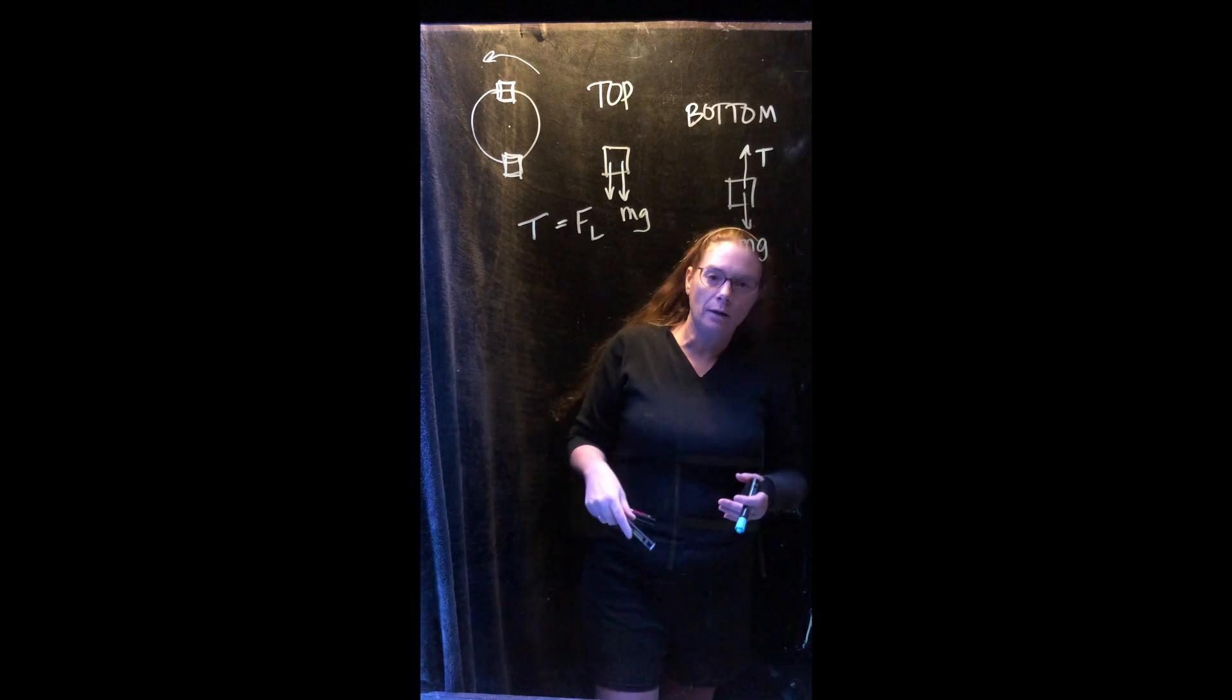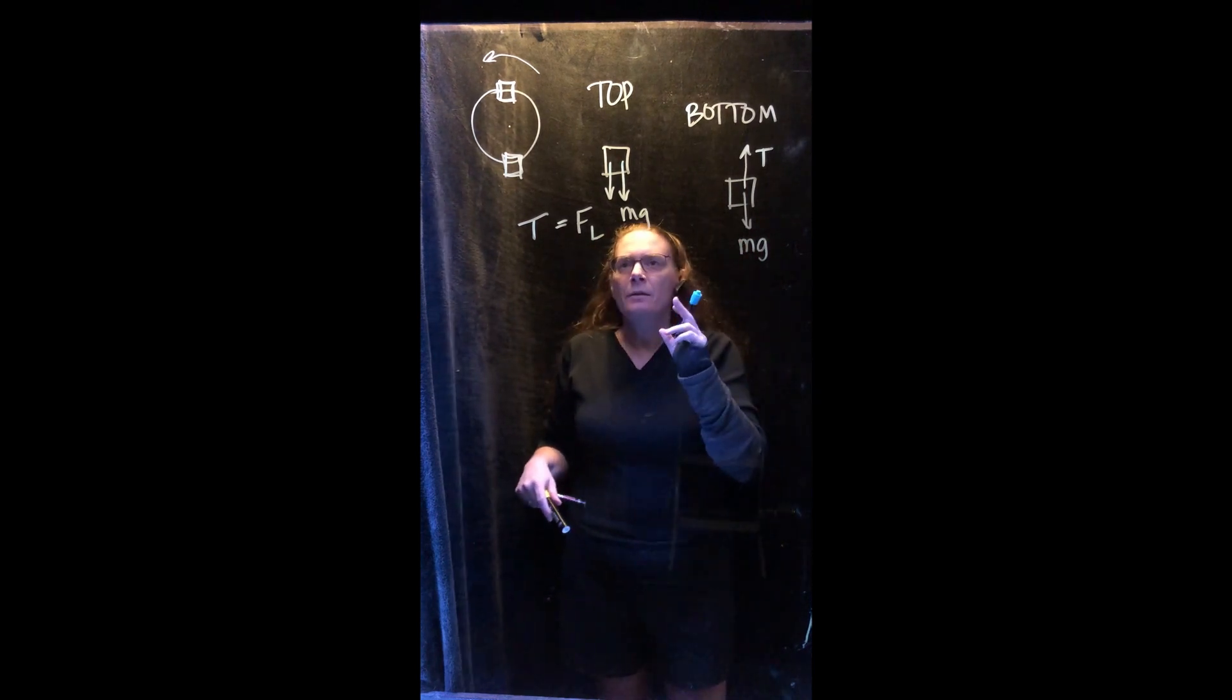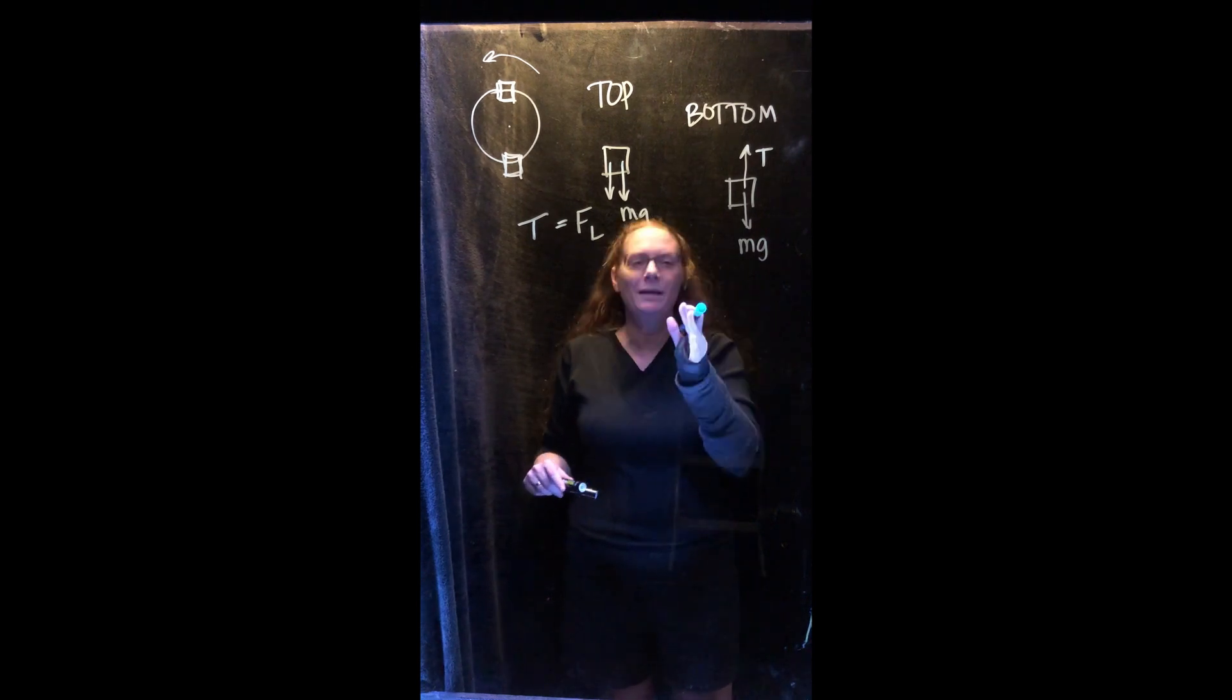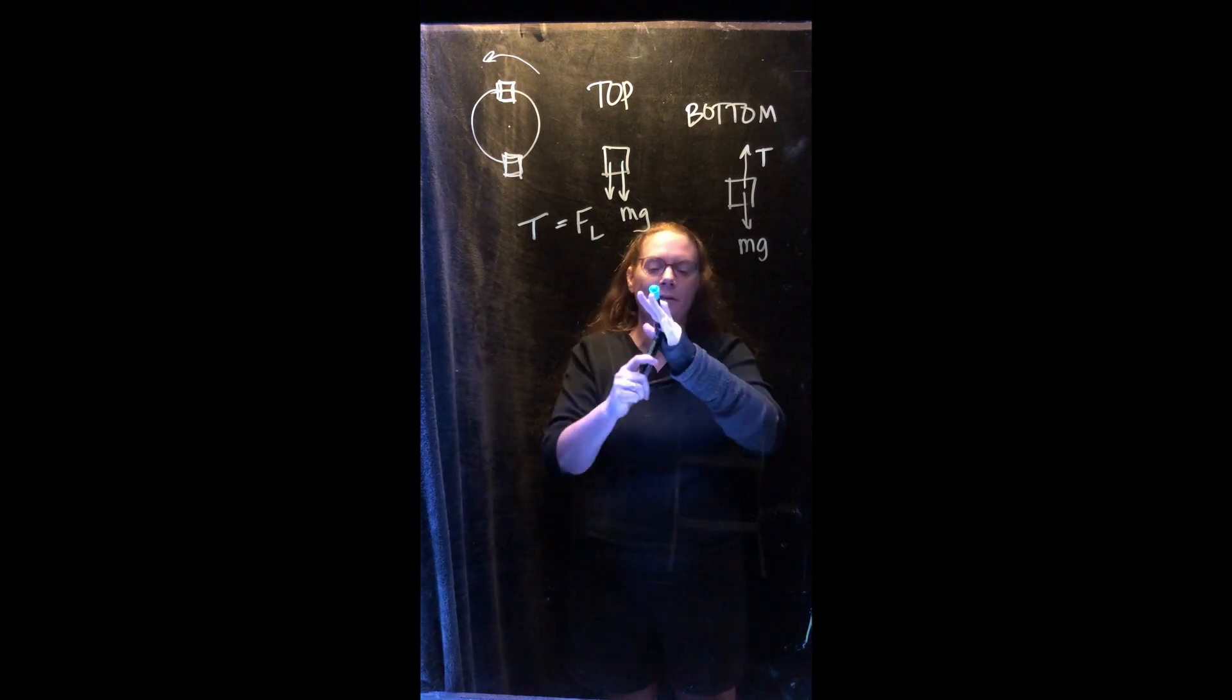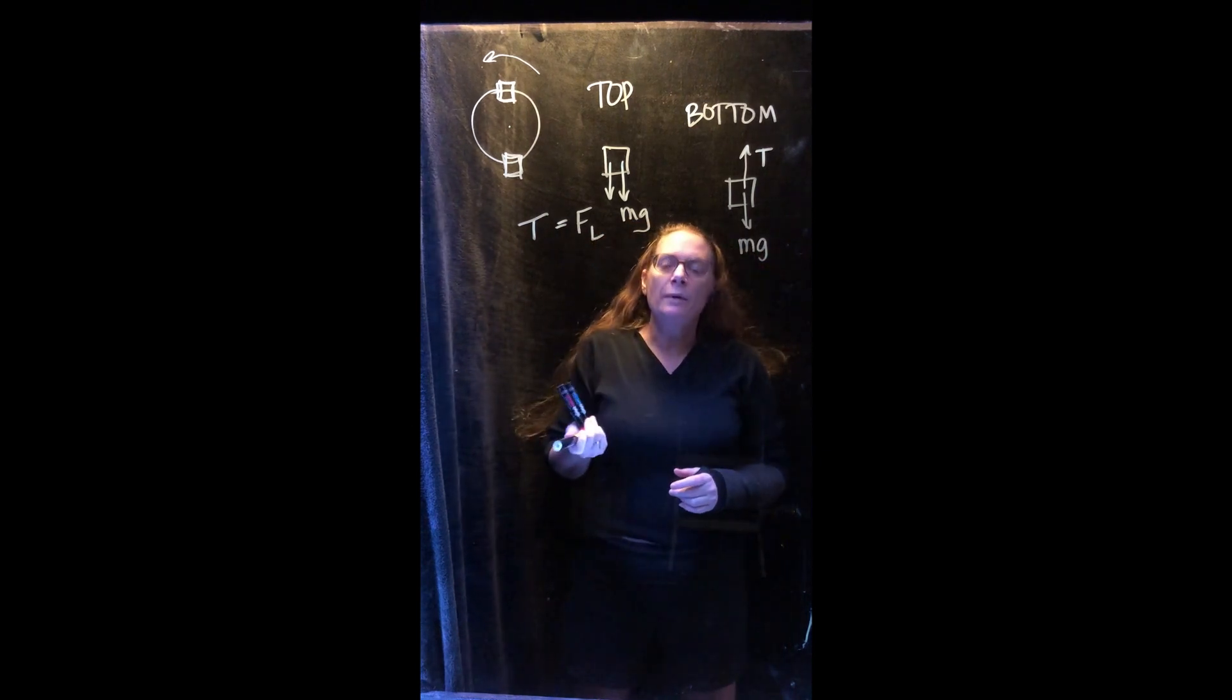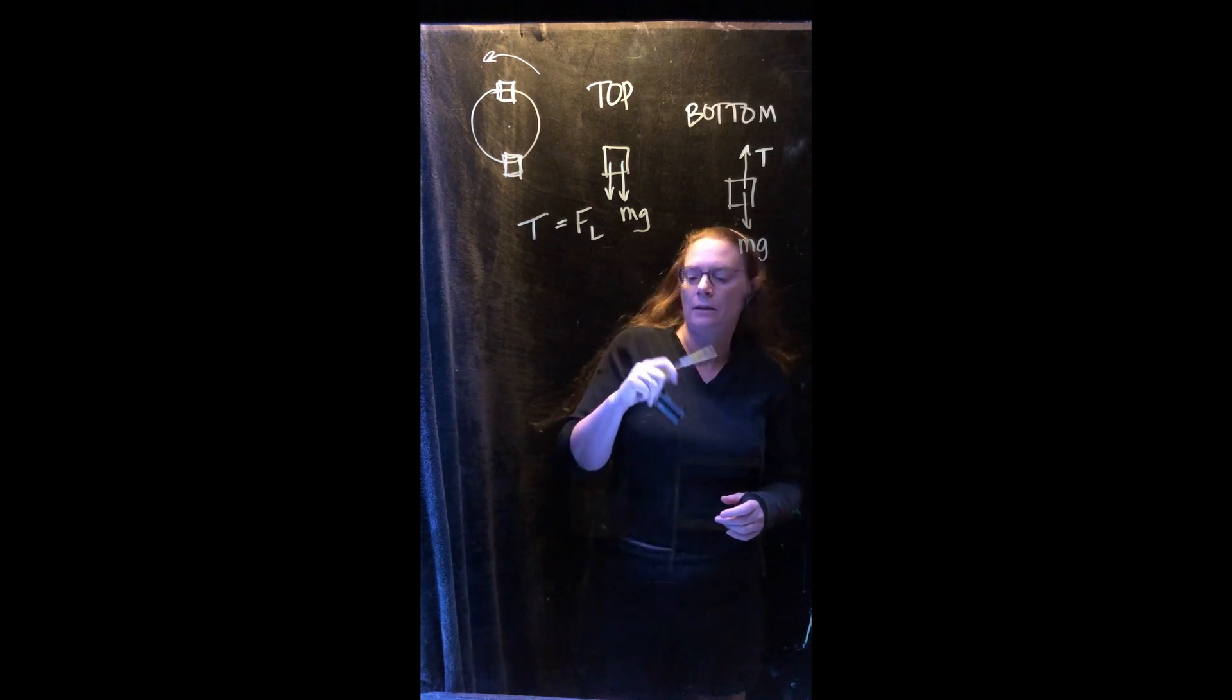It wants to keep going in a circle, and yet the lanyard, the string, keeps tugging it and changing its direction so it ends up going in that circle. I'm sorry, I misspoke there. I said it wants to keep going straight, that's what I want to say. Wants to keep going straight, but the string tugs it so it ends up moving in a circle.